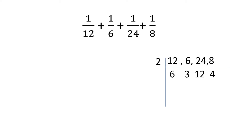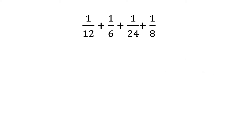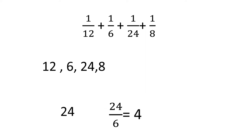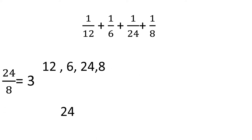The first thing we need to know is to look at the numbers 12, 6, 24, and 8 and see which is the highest. The highest number here is 24. Now we check whether 24 is divisible by the other three numbers: 24 ÷ 12 = 2, 24 ÷ 6 = 4, 24 ÷ 8 = 3. So the LCM is 24. Look how easy this method is!